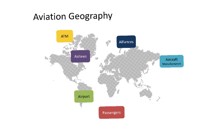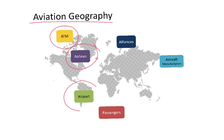When we talk about aviation geography, what we try to study are the different stakeholders — ATM, airlines, airports, and so on — that compose the aviation industry. Let's start to look at them one by one.